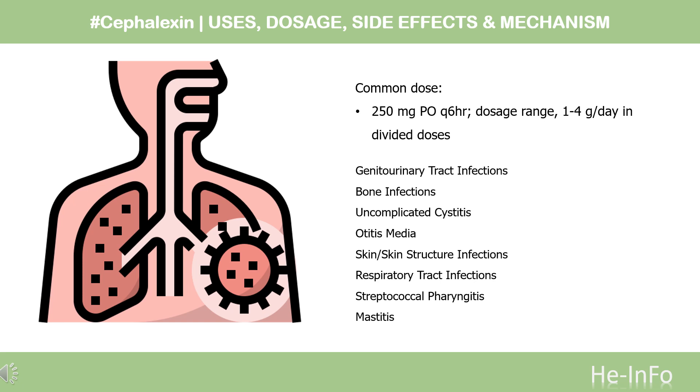Cellulitis and mastitis: 500 mg PO Q6H, dosage range 1–4 g/day in divided doses.